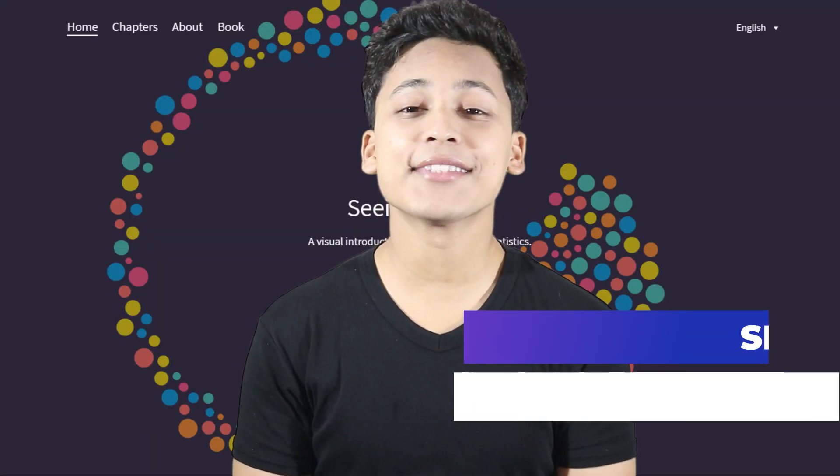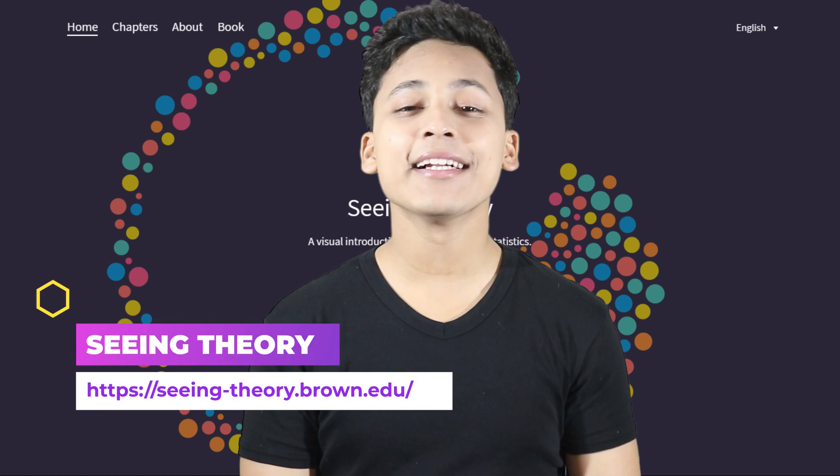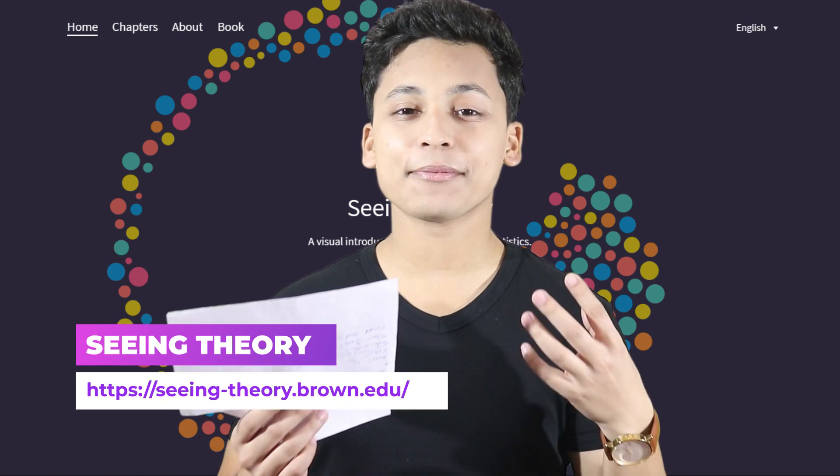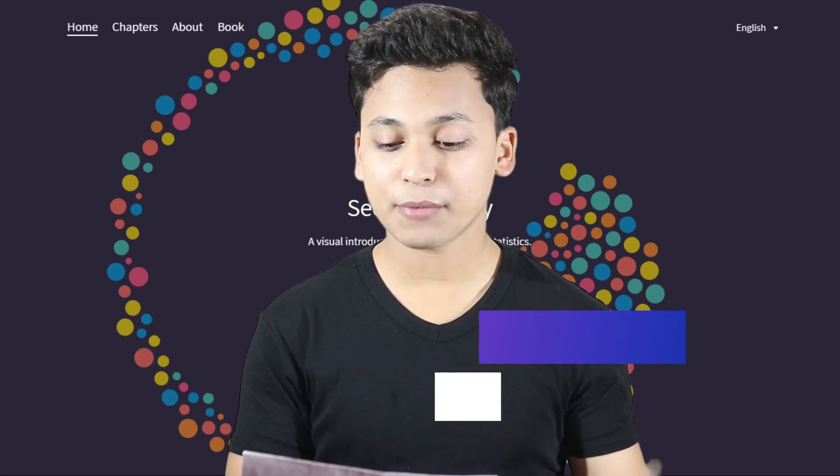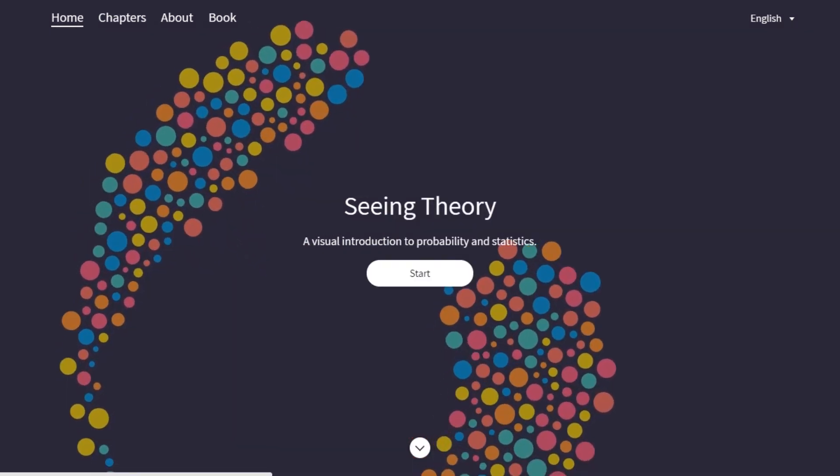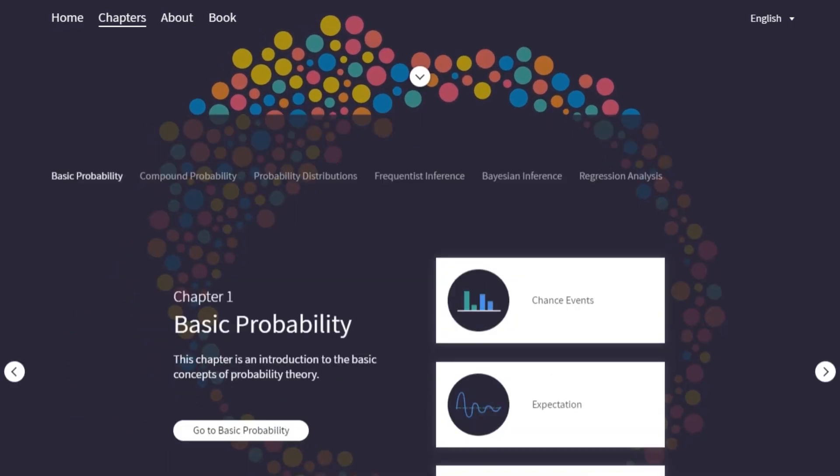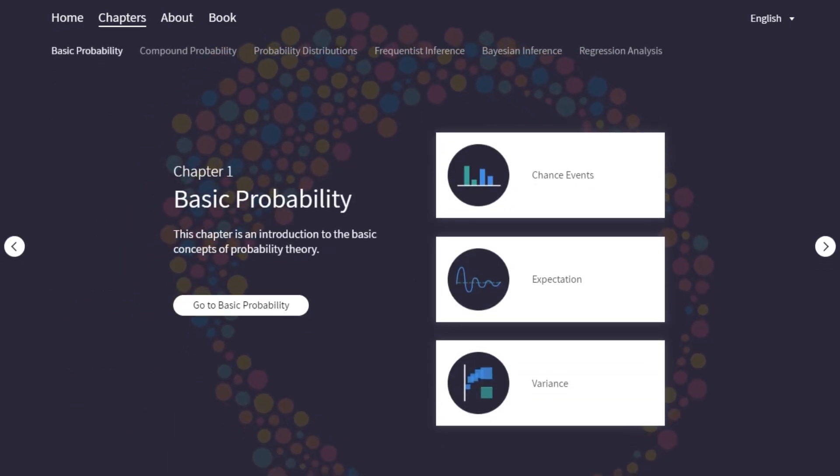So let's get into the first website that is Seeing Theory. Seeing Theory is quite cool and visually it looks very appealing if you visit this website. This website is more about probability and statistics, of course something that you would really like to learn if you're moving into machine learning.